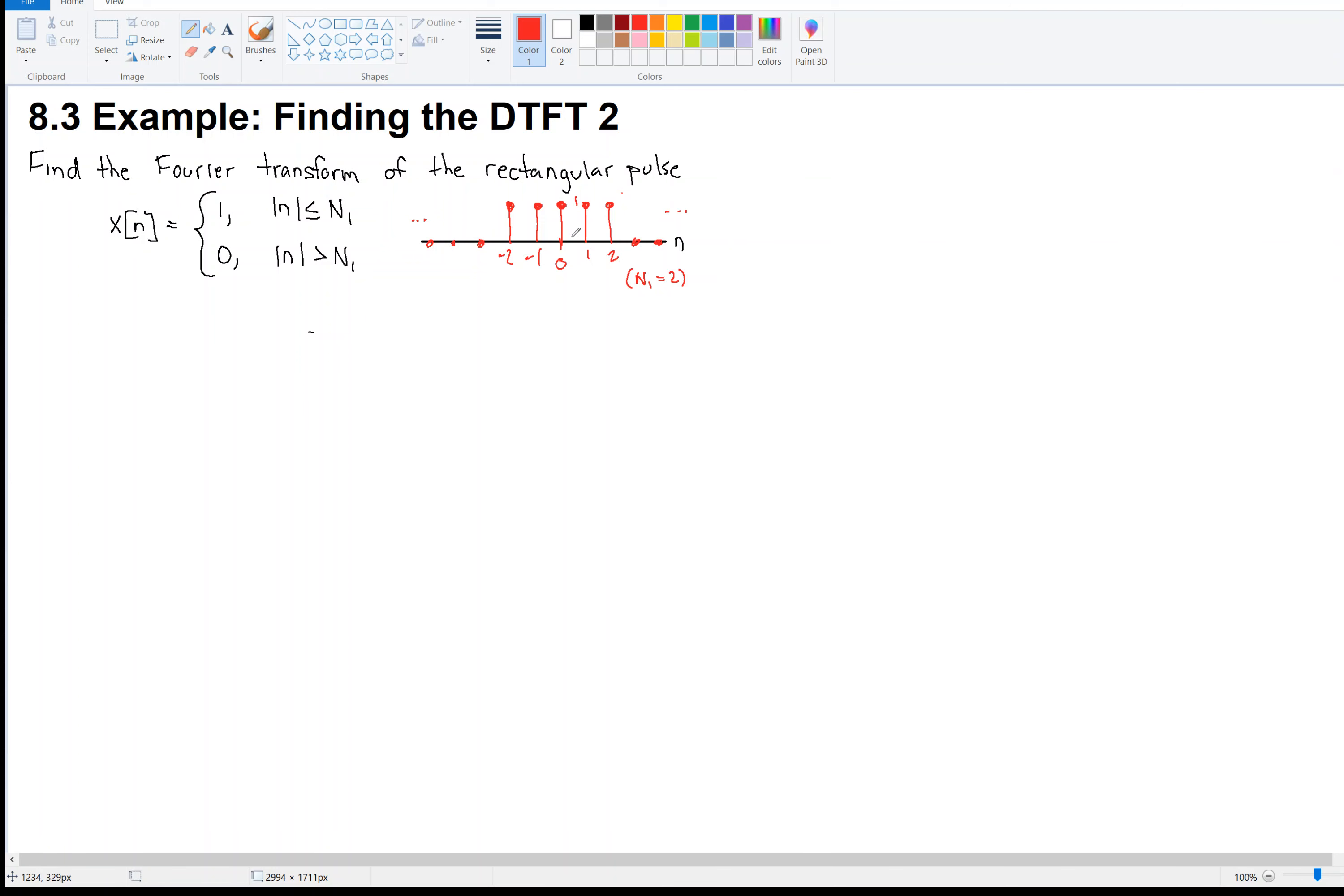Then it stays 0. And it's centered around the origin, and it has a pulse width of 2 times n1 plus 1, right? 5 in this case. All right. So we've got an idea of our signal that we're trying to find the Fourier transform of. Let's go to it. Let's get to it.